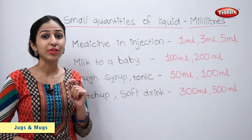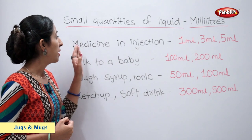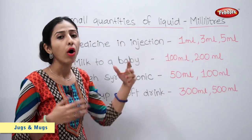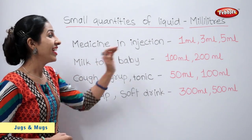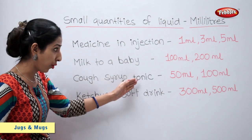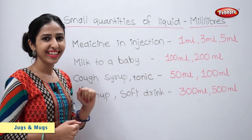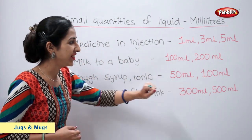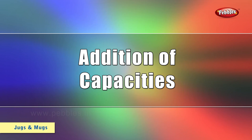Small quantities of liquid are measured in millilitres. For example, medicine in an injection — 1 ml, 3 ml or 5 ml. Milk given to a baby — 100 ml or 200 ml. Cough syrup or tonic that we buy — 50 ml or 100 ml. Ketchup or soft drink that we buy — 300 ml or 500 ml.